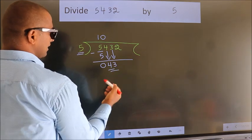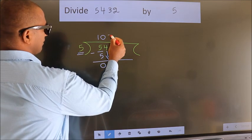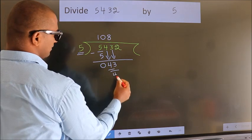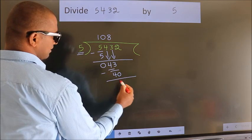So 43. A number close to 43 in 5 table is 5 eights, 40. Now we subtract. We get 3.